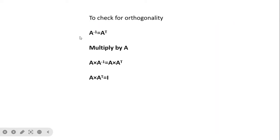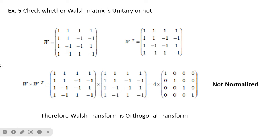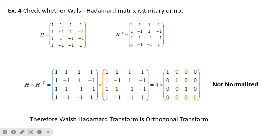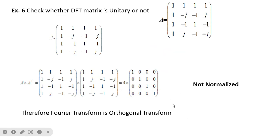To check orthogonality of a transformation matrix A — whether Fourier, Walsh, or DCT — the condition is A_inverse = A_transpose. That is, A·A^T = I. Example: for the Walsh-Hadamard matrix, we take its transpose and multiply; we get the identity matrix. After normalization, this confirms that the Walsh-Hadamard matrix is an orthogonal transform. Similarly, the Walsh matrix transpose multiplication yields the identity, confirming it is also an orthogonal transform.